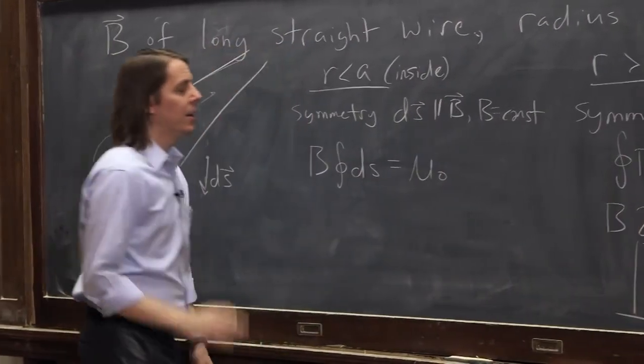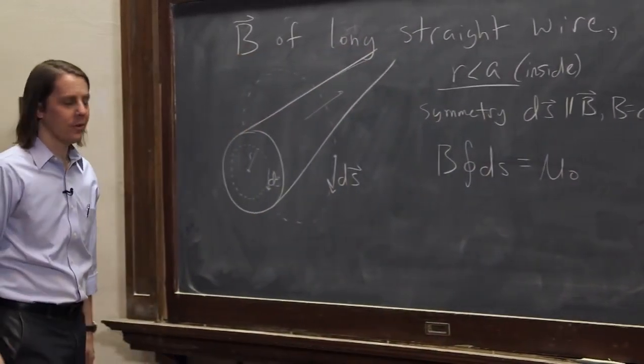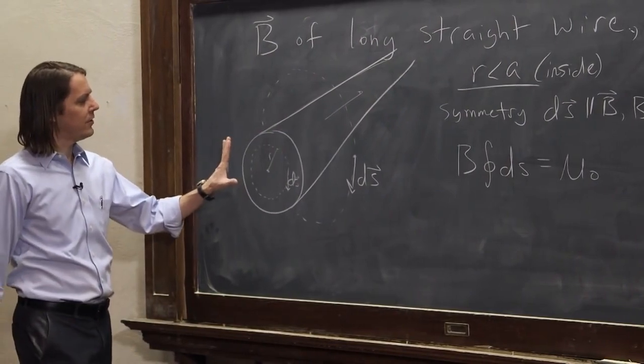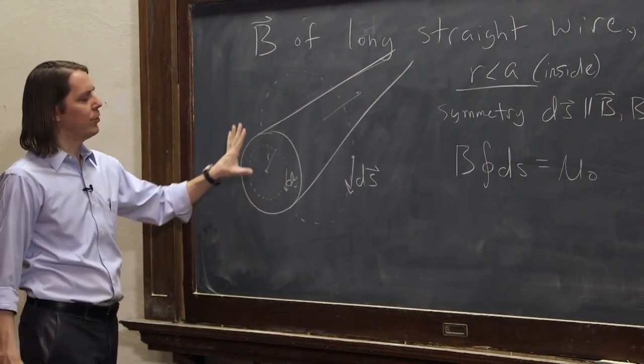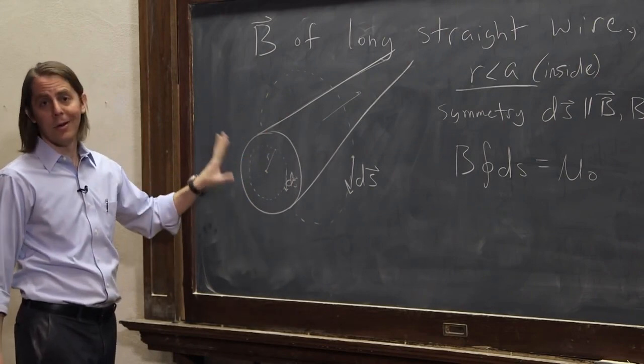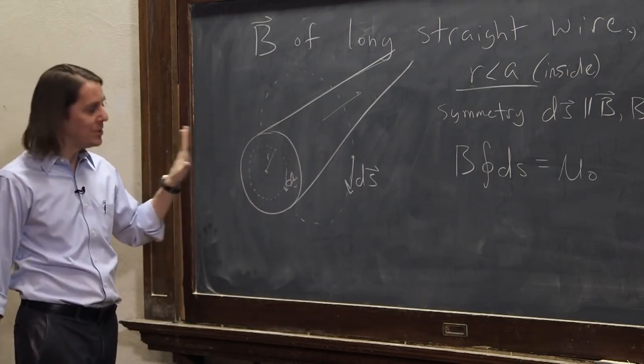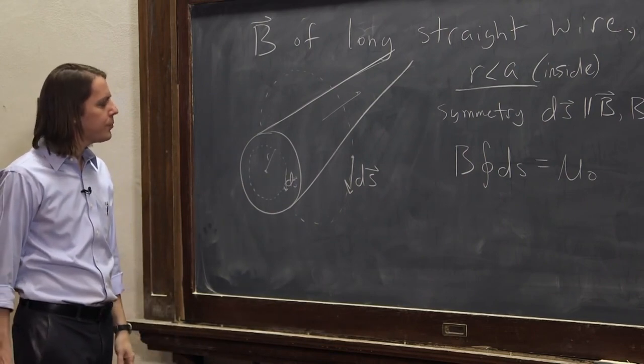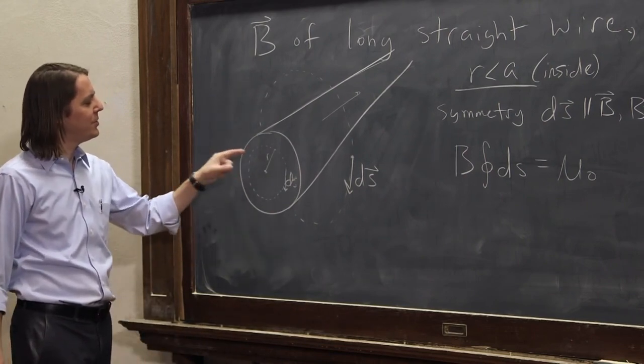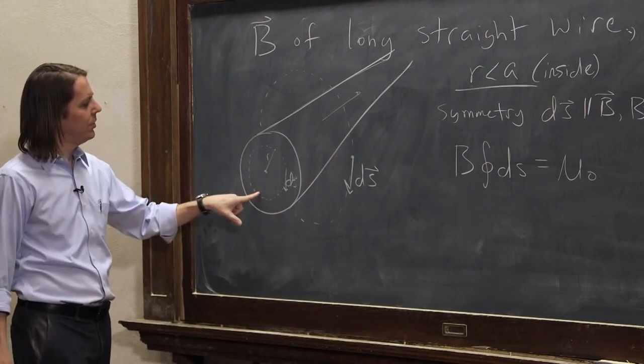So this is looking pretty similar. B equals mu naught. But now, here's the difference, is the current. The current I, whenever you see current in a wire, you assume it's evenly distributed over the cross-section of the wire. It may not really be, but you assume it is. And usually you'll be told that the current is uniformly distributed through the wire.